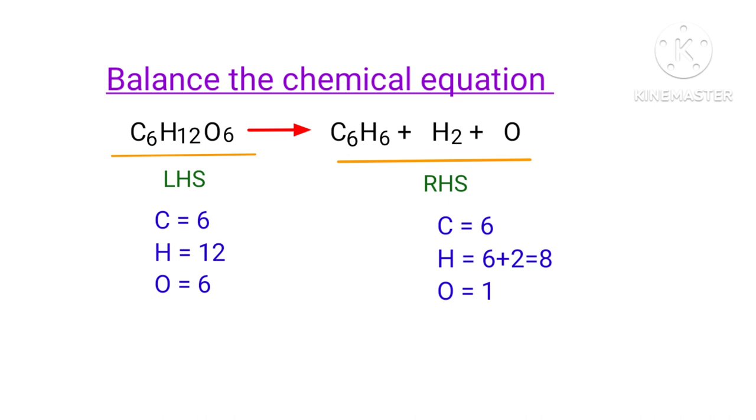The number of atoms are not balanced on both sides. To balance the chemical equation, we need to make use of coefficients. A coefficient is a number that we place in front of a chemical formula.